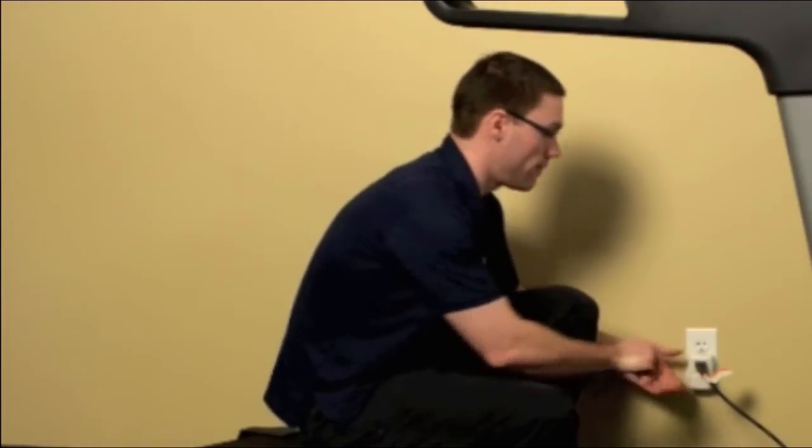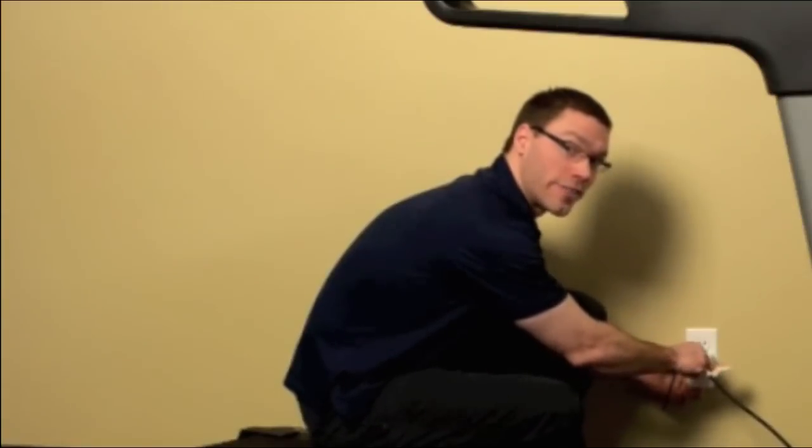The first step in making any adjustments to your treadmill is to disconnect the power supply from the wall. Notice I've got it plugged into a surge protector like the manual says.